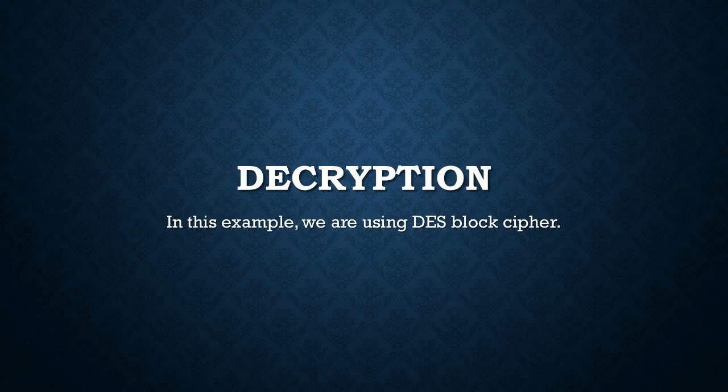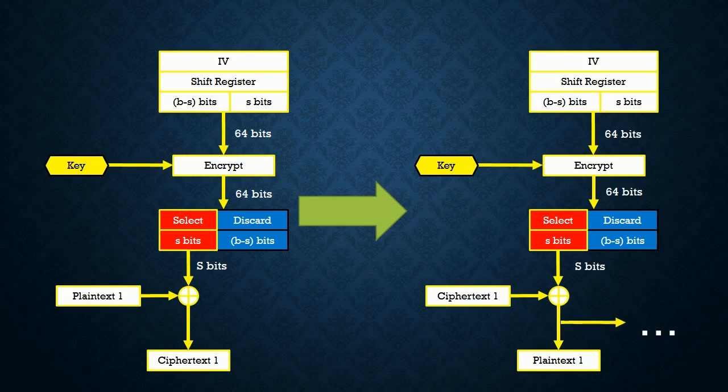After encryption, we will now proceed to the decryption process. Similarly, we are using DES block cipher in this example. The decryption of the cipher feedback mode is similar to how the data is being encrypted. The only difference is that the placement of the plaintext and ciphertext are switched, as shown. The decryption process will continue until all the ciphertext is decrypted.